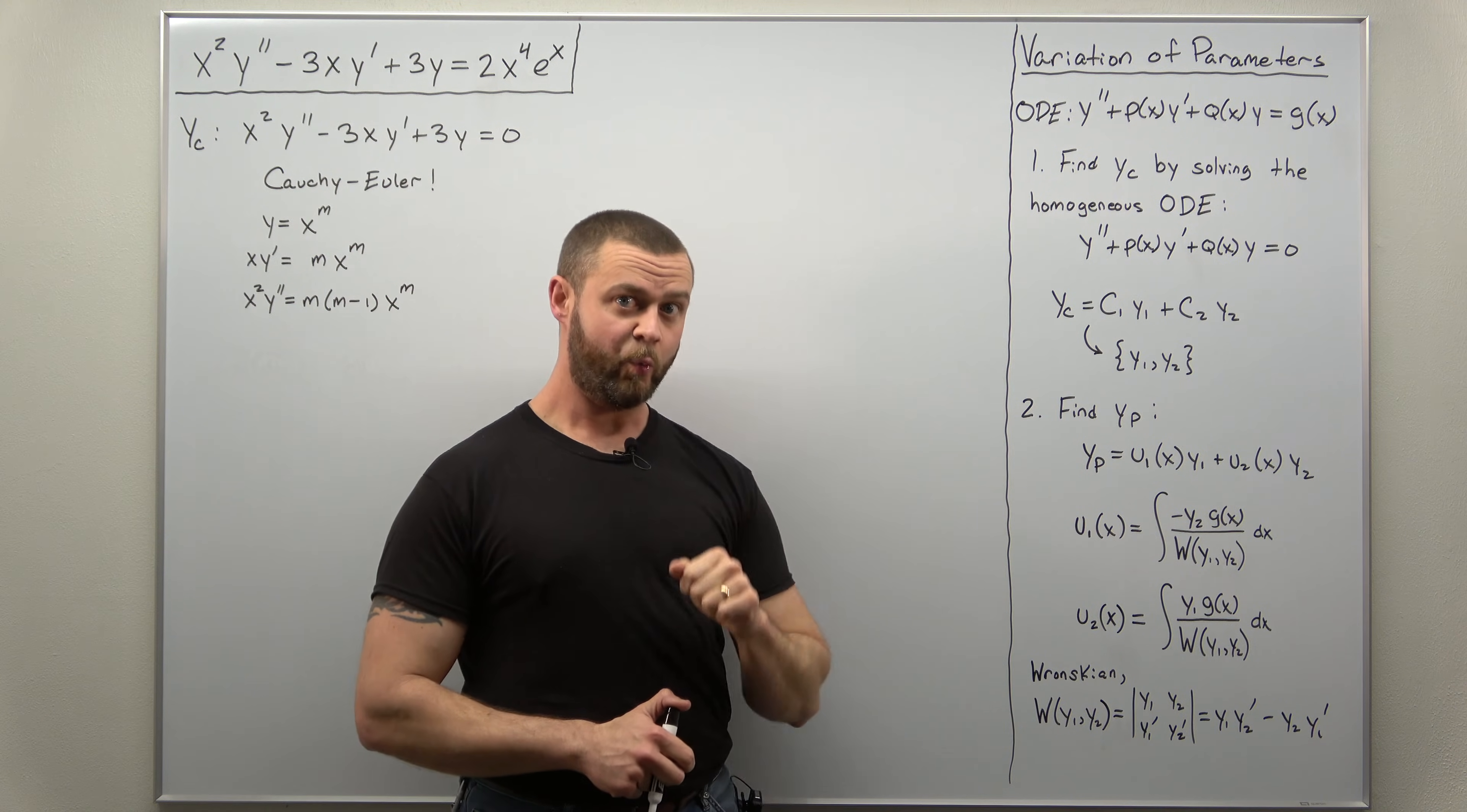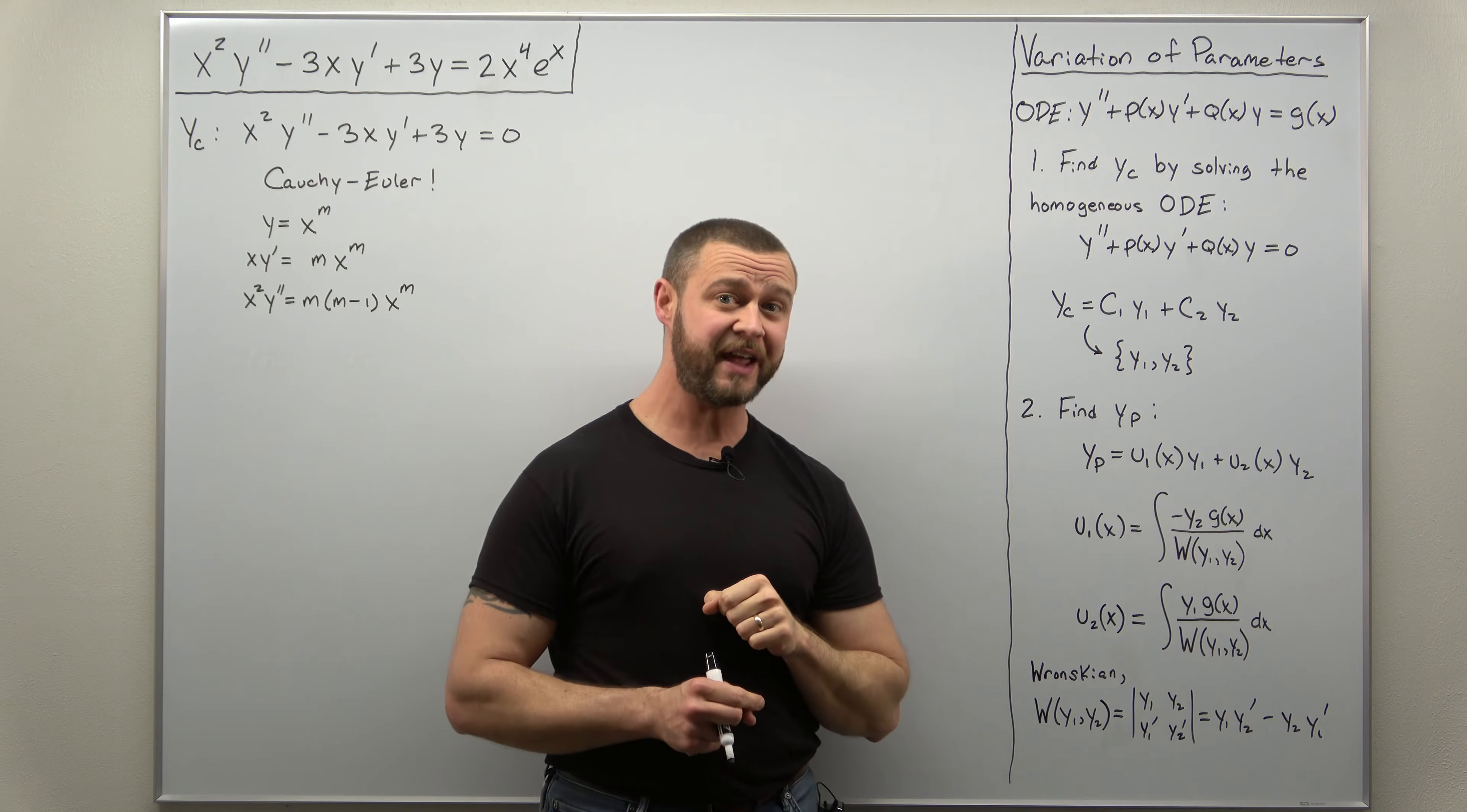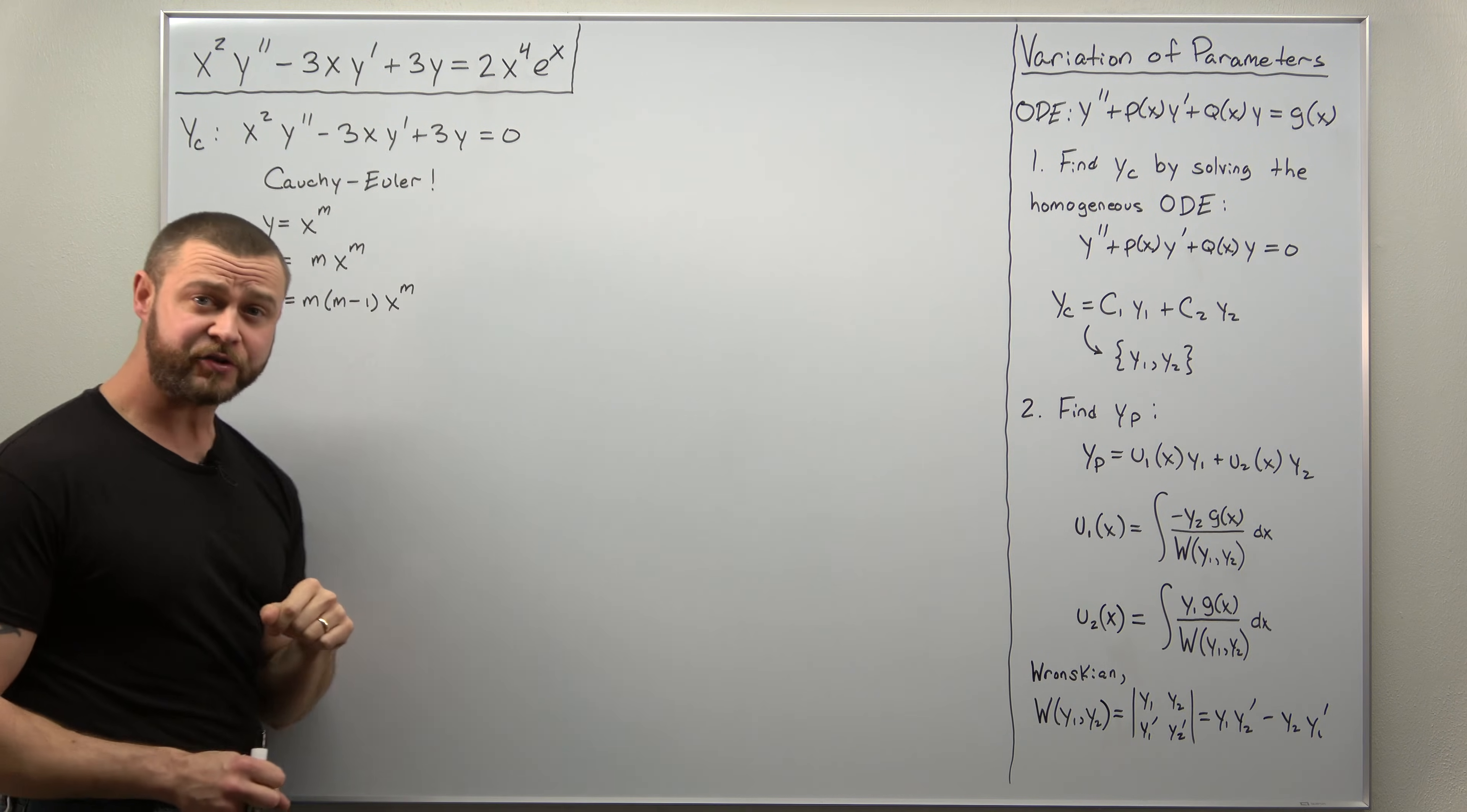Y1, Y2, the Wronskian, and most importantly for this example, the non-zero right-hand side, G of X. Now for this problem, there's actually a trick, and it really tests how well you understand the method of variation of parameters and the theorem from which these U1 and U2 expressions come from. We'll get to that at some point, what that trick is, but let's get started with the first part, finding the complementary solution.